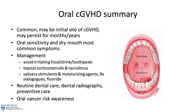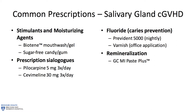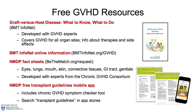I'm not going to go through these next slides, but just to orient you — because you have these in your handouts — this is a summary of common prescriptions for mucosal disease and some best practices. This is common prescriptions for salivary gland disease. This is a table summarizing guidelines for screening, prevention, and management of late complications. And this is a slide making you aware of various other resources available through BMT InfoNet and other organizations. So I'll stop there — we have at least 15 minutes.